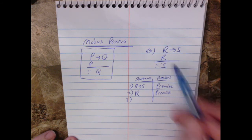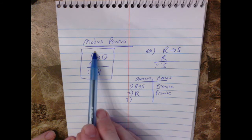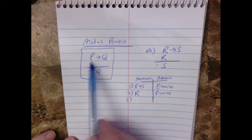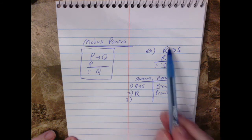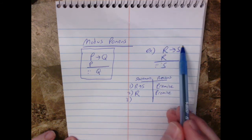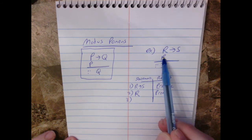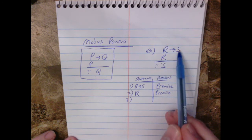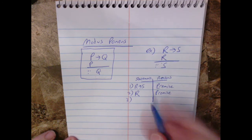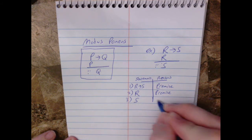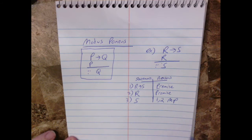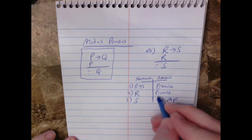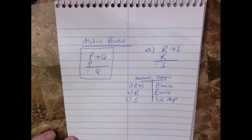So here's how I usually like to describe it. If this, then that. We have this. Therefore, that. We have if this, then that. We have this. Therefore, we're trying to prove that. So this one would simply be S because of steps one and two using modus ponens. And that's how you would write it. You could just abbreviate modus ponens. You could even abbreviate these. I just didn't this time.